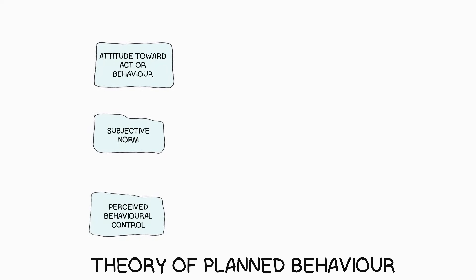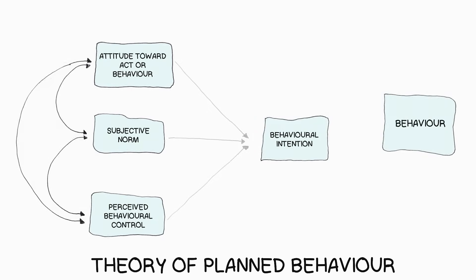What the theory now actually predicts is that a positive attitude towards the act or behavior, favorable social norms, and a high level of perceived behavioral control are the best predictors for forming a behavioral intention and in turn lead to a displayed behavior or act.